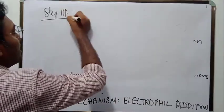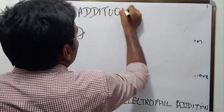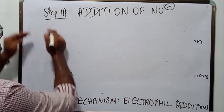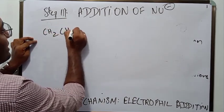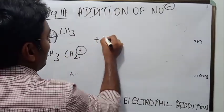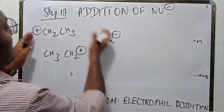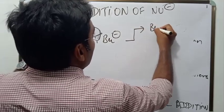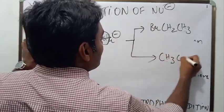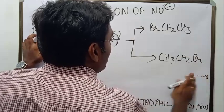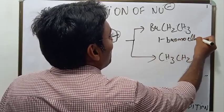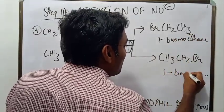Let me write both carbocations — this is case one and this is case two. Now let Br minus react with both. In case one, Br would come here to form CH2–CH2Br, which is bromoethane. In case two, CH3–CH2Br is formed — also bromoethane. This is amazing because both possibilities actually give the same product: 1-bromoethane. Both case one and case two give 1-bromoethane.